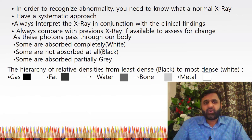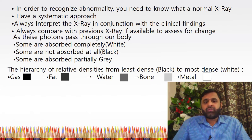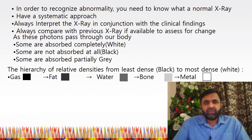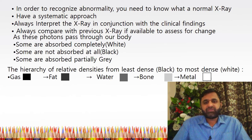As X-rays pass through the body, some are absorbed completely, giving a white appearance on film. Some are not absorbed at all, giving a black appearance, and some are absorbed partially, giving a gray appearance. The hierarchy of relative densities from least dense to most dense is: gas/air is jet black, then fat as in connective tissue, then water as in muscles, then bone, then metal — which is most dense and shows white appearance on X-rays.